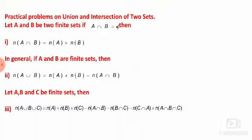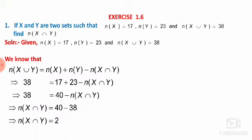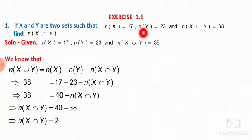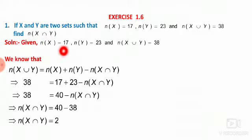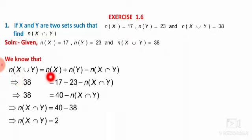Now with the help of these formulas we are going to solve problems from exercise 1.6. First example: if X and Y are two sets such that N of X is 17, N of Y is 23, and N of X union Y is 38, find N of X intersection Y. We know that N of X union Y equals N of X plus N of Y minus N of X intersection Y.